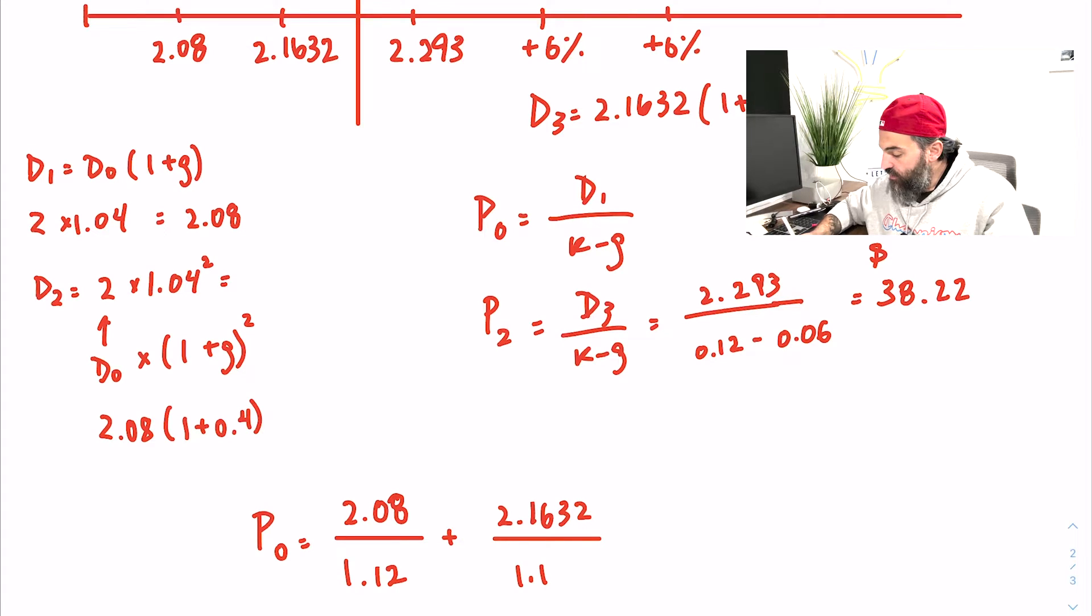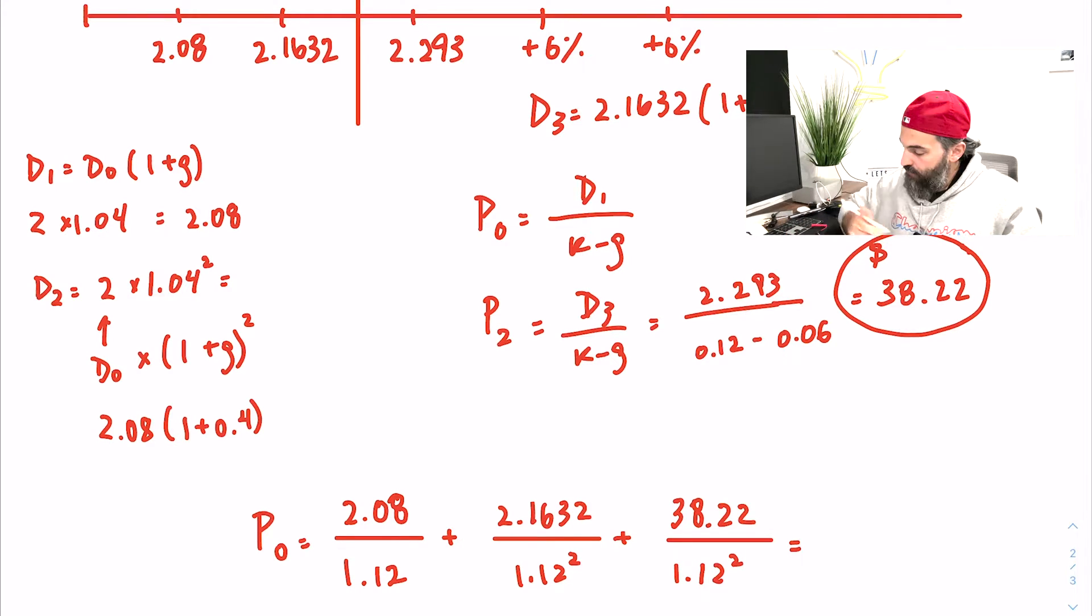And I'm going to discount this future value to present date, so 38.22 over 1.12 squared. That'll give you the price of the stock today. So I get $36.52.